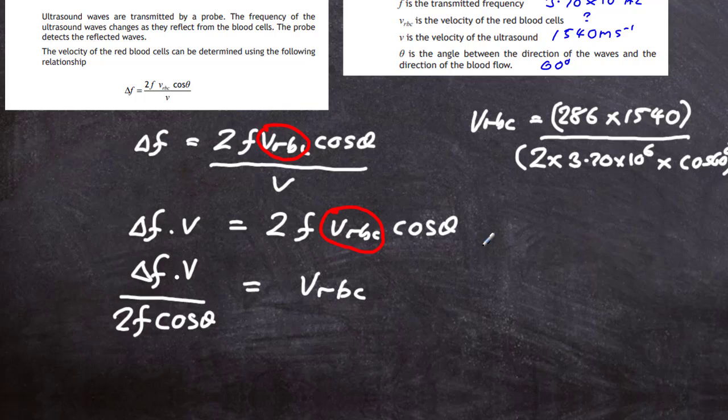I'll go through with my calculator and work that out. I end up with an answer to two significant figures of 0.12 meters per second. That will be the speed of the red blood cells in the blood vessel.